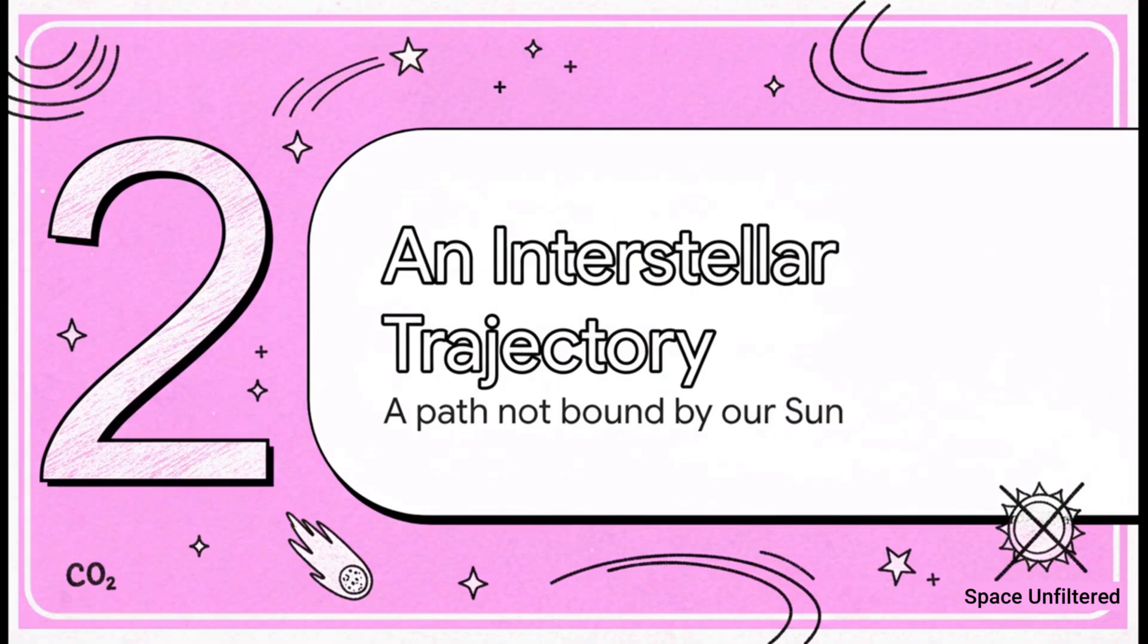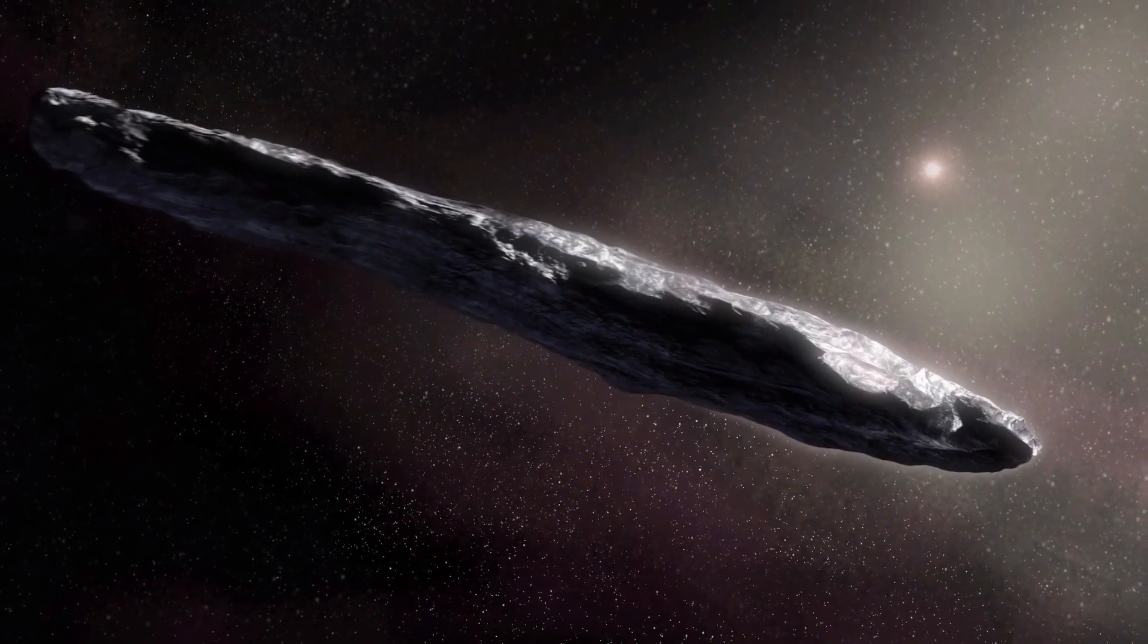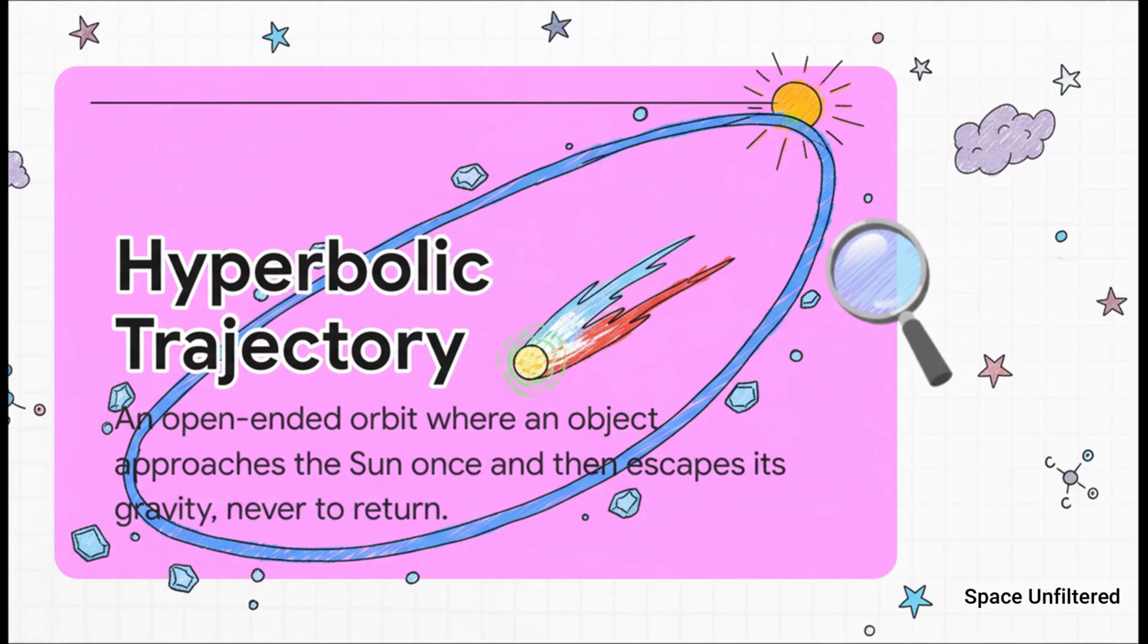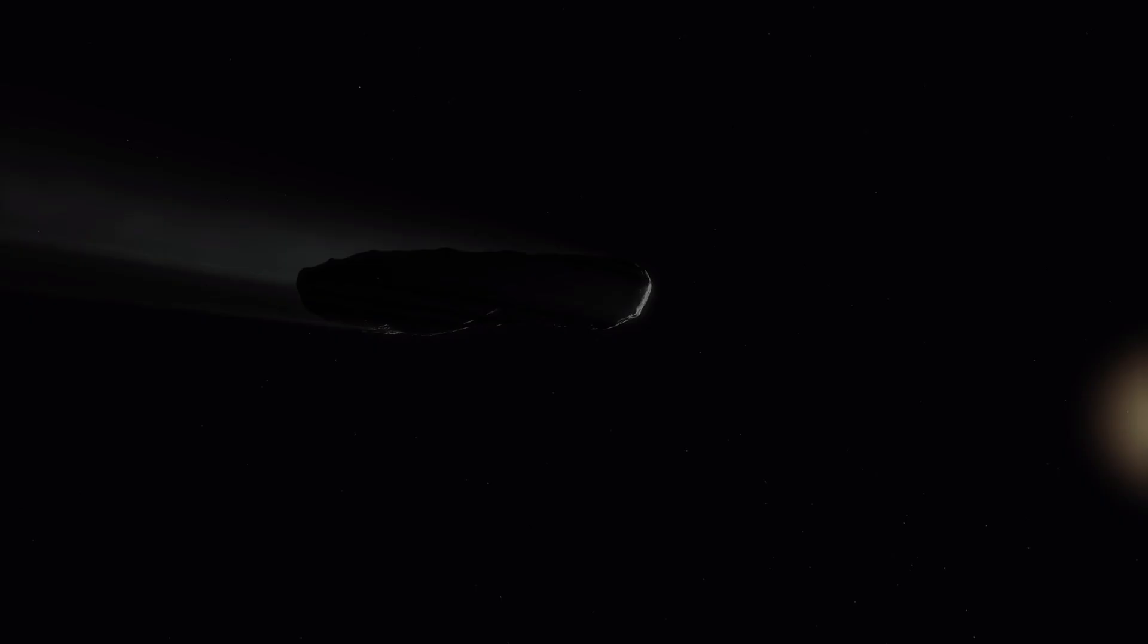The key piece of evidence proving its interstellar origin is its path through space. Everything that's native to our solar system, from planets to comets, travels in closed elliptical orbits. They are all gravitationally bound to the sun.